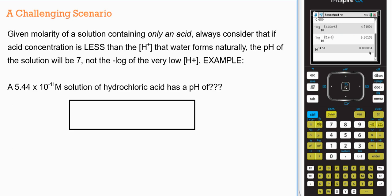So here's a challenging idea. Given the molarity of a solution containing only an acid, now remember, you've got water with acid dropped into it. Always consider that if acid concentration is less than the concentration of water that forms naturally, in other words, the ion concentration of hydrogen ions already in water, which was 1 times 10 to the negative 7.